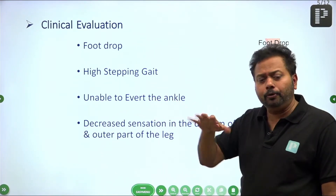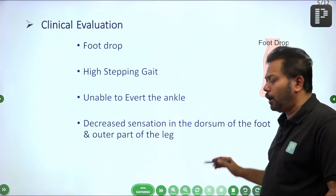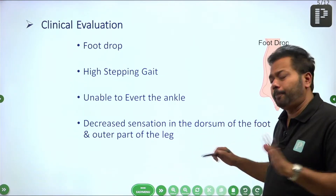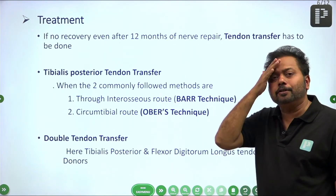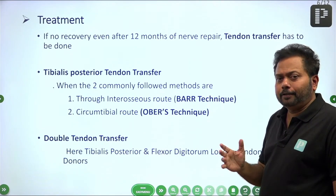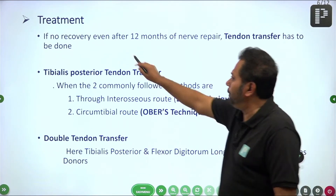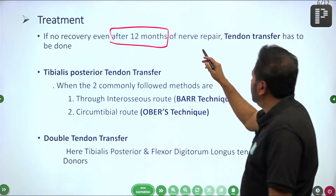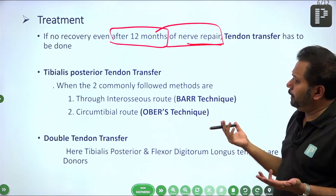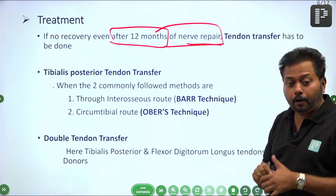In clinical evaluation: foot drop, high stepping gait, inability to evert the ankle. On testing sensation, there is decreased sensation over the dorsum of the foot and outer part of the leg. Management of foot drop: wait and watch policy, give splints, do physiotherapy. If no recovery even after 12 months, tendon or nerve repair. If there is no recovery after 12 months, tendon transfer is the only option.